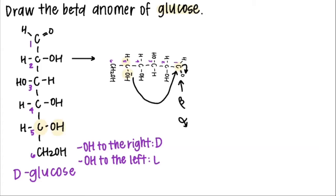Other ways I've heard is that beta are like birds. They're up in the sky and alpha looks like a fish which are down in the sea. But whatever works for you.